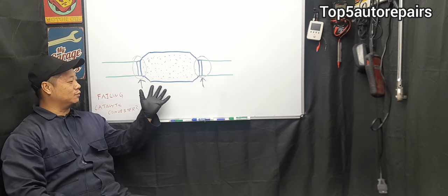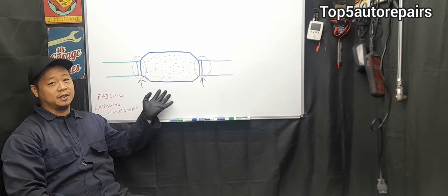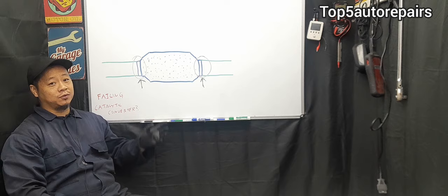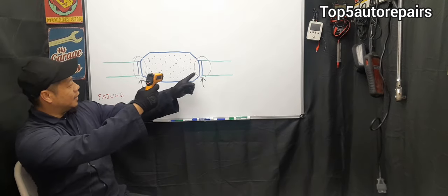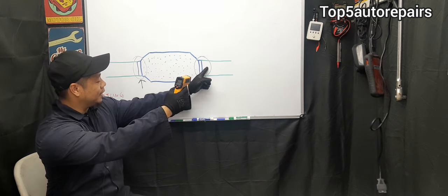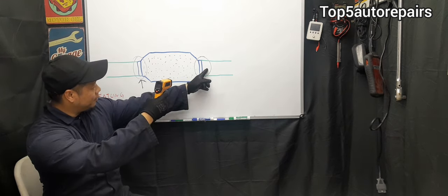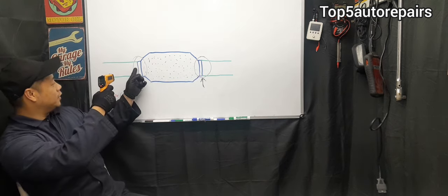The first thing you want to do is you want to warm up your engine for about 10 minutes or so. And with the engine running, go ahead and check the temperature on the front end. And afterwards, check the temperature on the back end. If the temperature on the back end is lower than the front end, then you know this catalytic converter here is clogged.